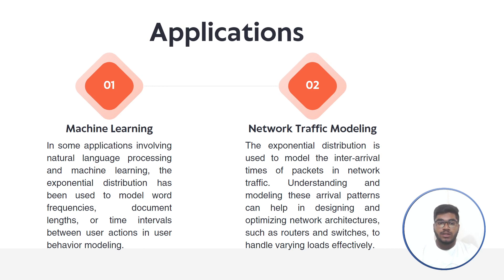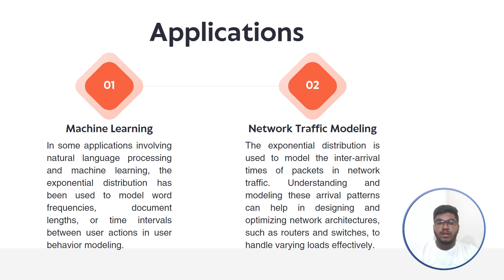Let us discuss the major applications of exponential distribution in the CS stream. In machine learning, the exponential distribution has been used to model word frequencies, document lengths, or time intervals between user actions in user behavior modeling, including applications involving natural language processing.